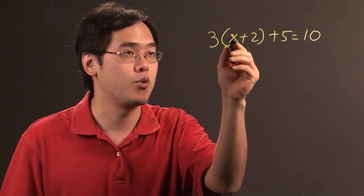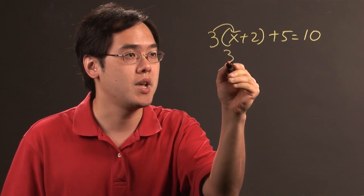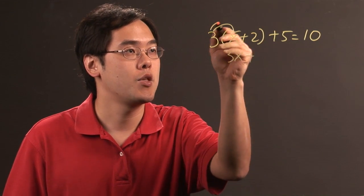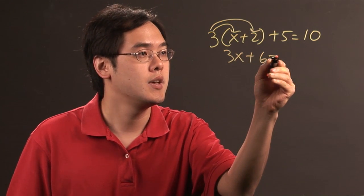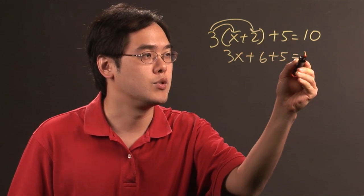when you multiply through the parentheses, you have 3 times x, which is 3x, plus 3 times 2, which is 6, and then plus 5 equals 10. So 3x+6+5=10.